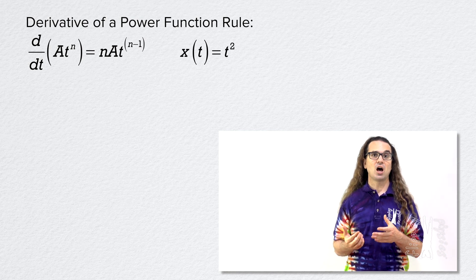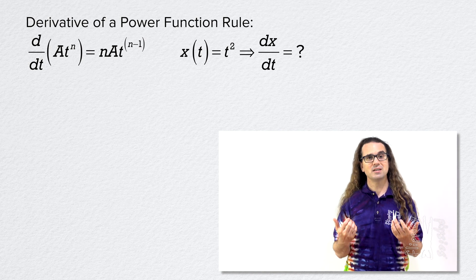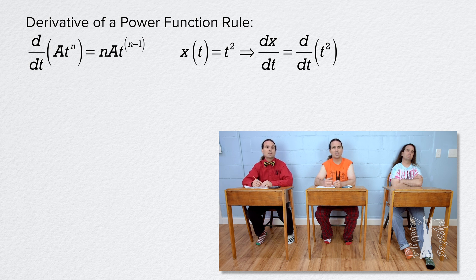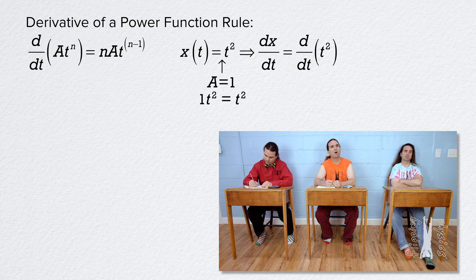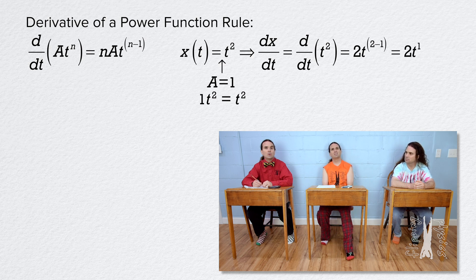If the function is position as a function of time equals time squared, please use the power rule for derivatives to determine the derivative of that function with respect to time. The derivative of position with respect to time equals the derivative with respect to time of time squared. Looking at the derivative power rule for this function, a equals 1 and n equals 2. So the derivative equals n, which is 2, times a, which is 1, times time to the power 2 minus 1. So it equals 2 times time to the first power, which is just 2 times time.